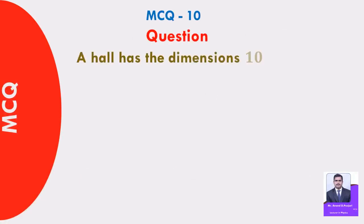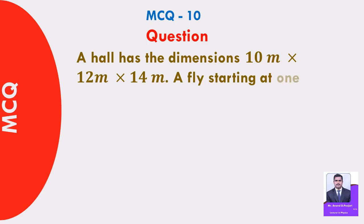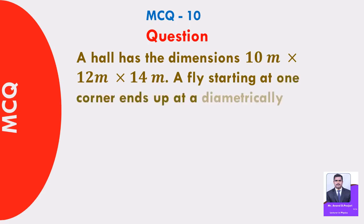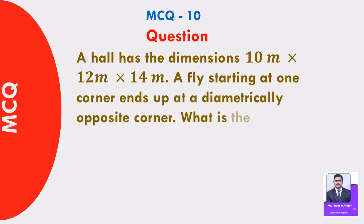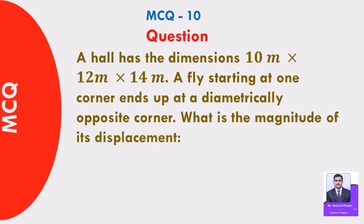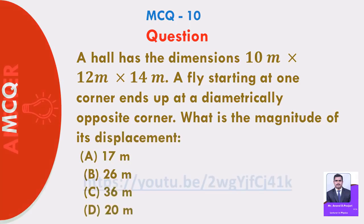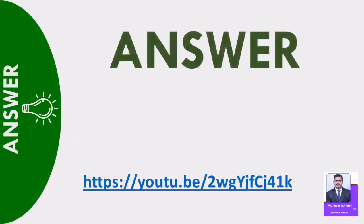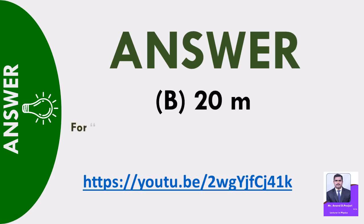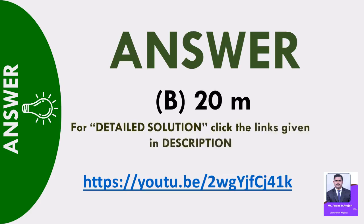MCQ 10: A hall has dimensions of 10 meter by 12 meter by 14 meter. A fly starting at one corner ends up at the diametrically opposite corner. What is the magnitude of its displacement? A) 17 meter, B) 26 meter, C) 36 meter, D) 20 meter. Answer: 20 meter. For detailed solution, click the links given in description.